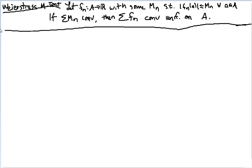This is a screencast for an example of the Weierstrass M-Test. The Weierstrass M-Test says that if you have a sequence of functions, such that each one is bounded by its own individual bound, then if the sum of the bounds converge, then the sum of the functions converge uniformly on A.